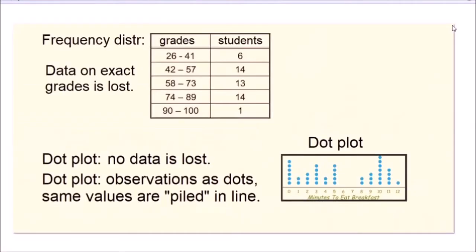And as I mentioned, it's a way to summarize data. Another way to summarize data is frequency distribution, and there is a difference between a frequency distribution and a dot plot, even though they both are ways of summarizing data.